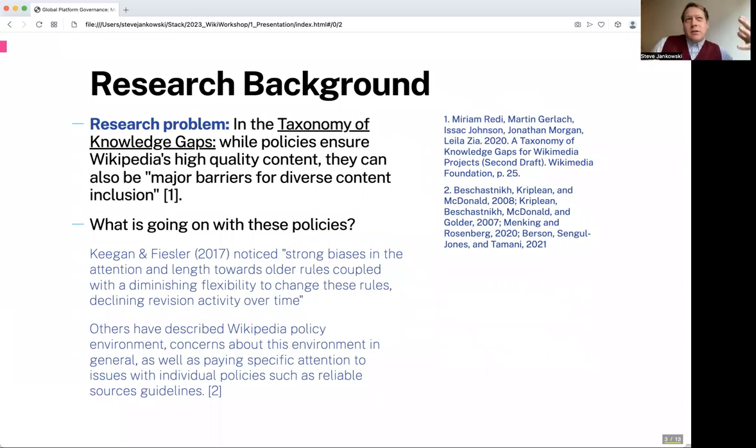While Wikipedia's policies are useful for creating high-quality content, they can be major barriers for diverse content inclusion. One of the issues is that the policies tend to be conservative. They were calcified many years ago. There's a lack of activity now.